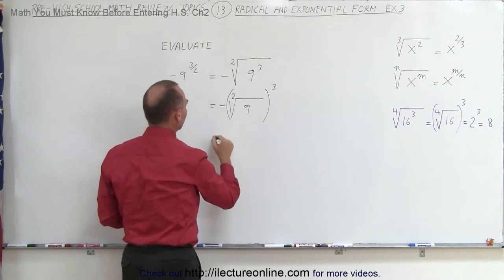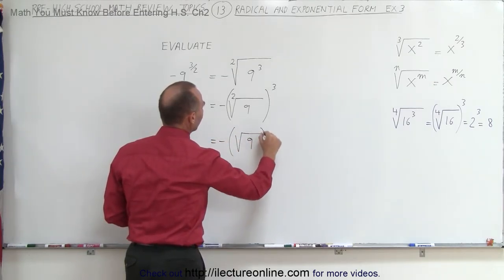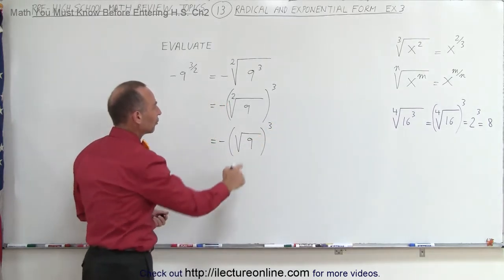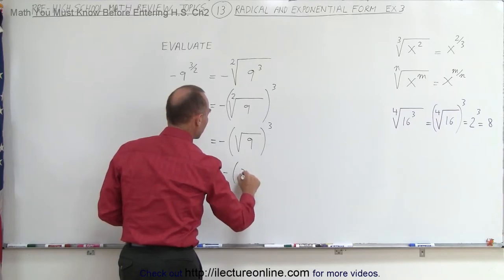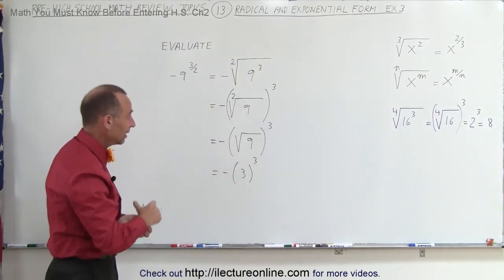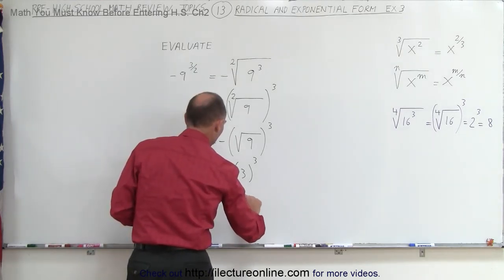Of course, we don't have to write the 2 there, so this could have easily been written as such. Without the 2 there, simply the square root of 9, and now what we can do is take the square root of that, so this is equal to the negative of 3 quantity cubed, because the square root of 9 is indeed 3, and then of course 3 cubed is 27, so this becomes a negative 27.